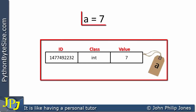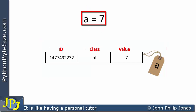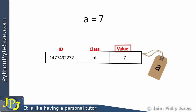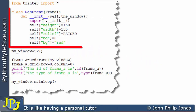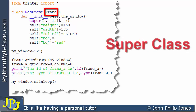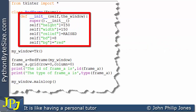The previous video in this playlist defined a class called red_frame, which is the subclass of the frame superclass. I coded up an initialization routine which I explained in detail in the previous video. What I want to do here is to look at the line: frame_A is assigned red_frame with the brackets containing my_window. This line creates an instance of this class — an object of this class.